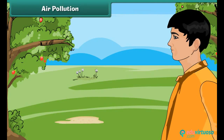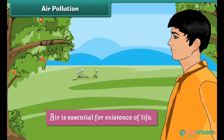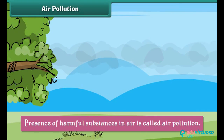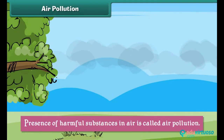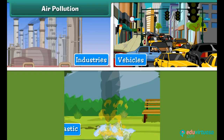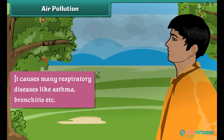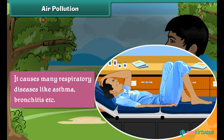Air pollution. Air is essential for the existence of life. Presence of harmful substances in air is called air pollution. Air pollution is caused by smoke emitted by industries, vehicles, and burning of plastic. It causes many respiratory diseases like asthma, bronchitis, etc.